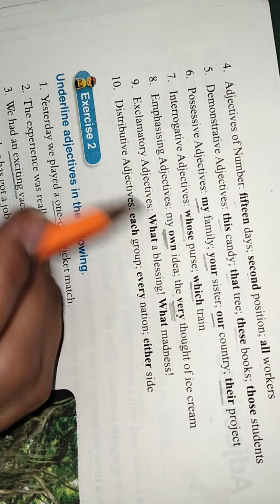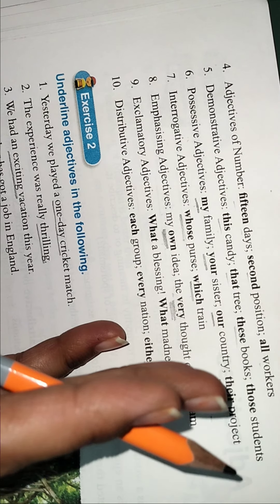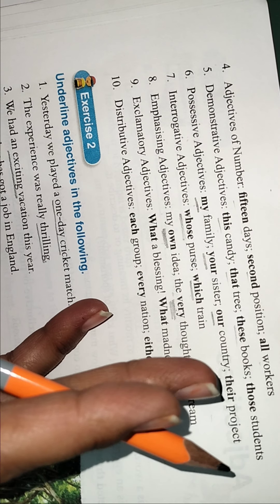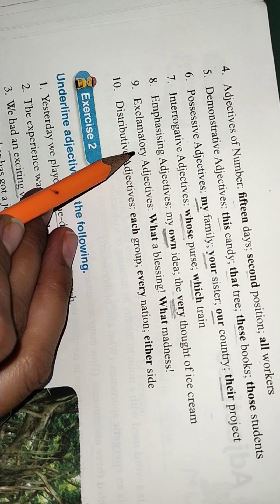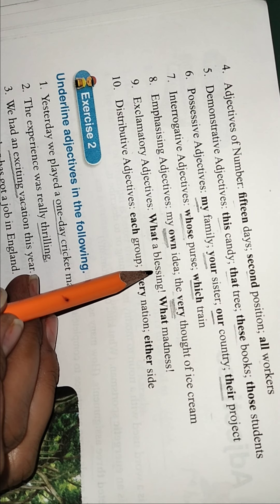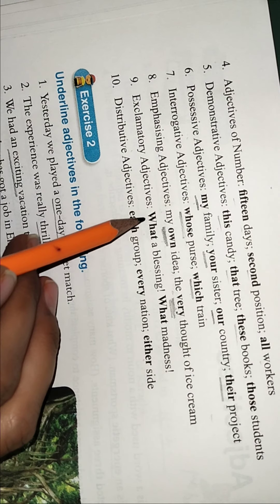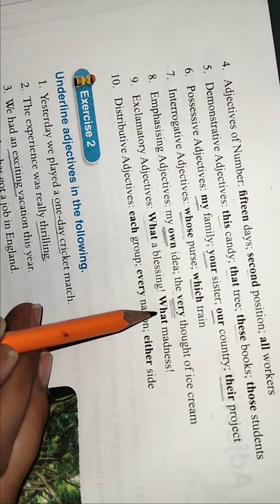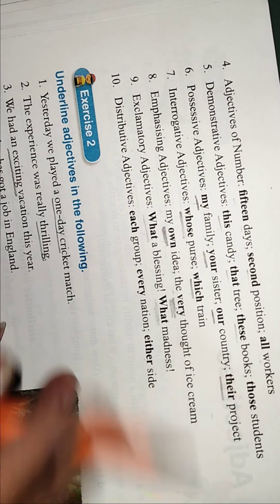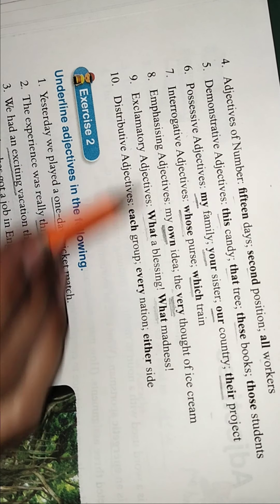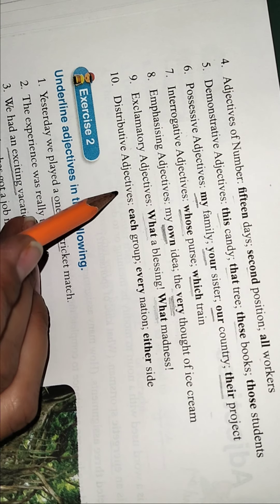Exclamatory - when you're showing your joy or sorrow or excitement, that is related to the exclamatory. Wow, what a blessing, what madness. So here it is in the joyous form or it is in the very shocking form. What madness? So these words are used as exclamatory adjectives.